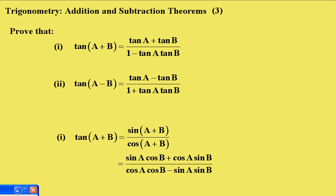Trigonometry, Addition and Subtraction Theorems, part 3. We have to prove that tan(A + B) equals tan A plus tan B over 1 minus tan A tan B, and part two, tan(A - B) is tan A minus tan B over 1 plus tan A tan B.